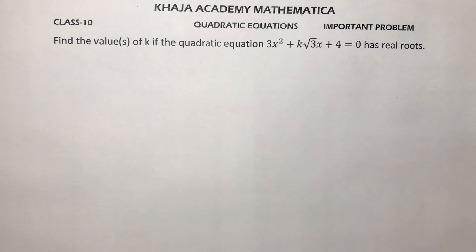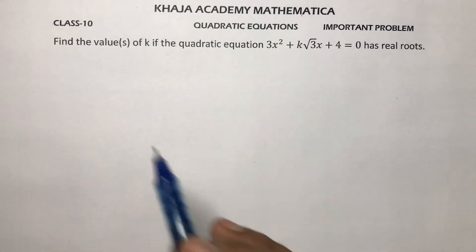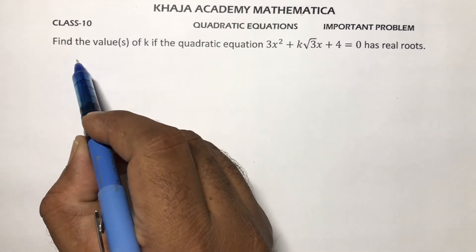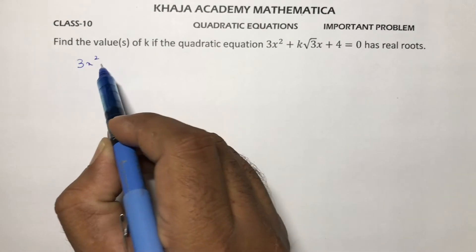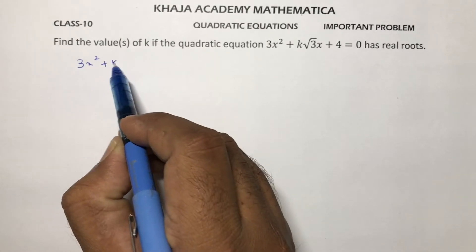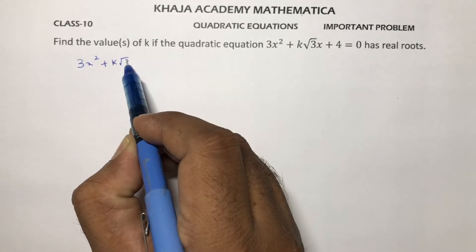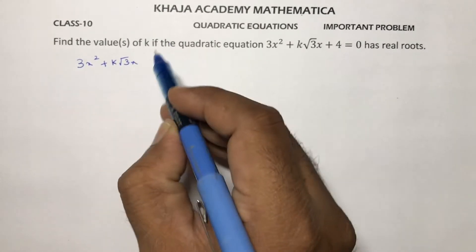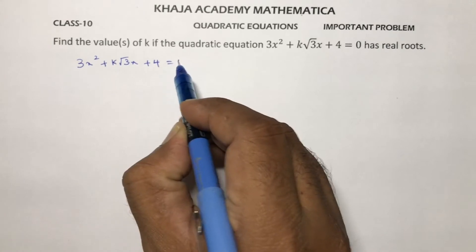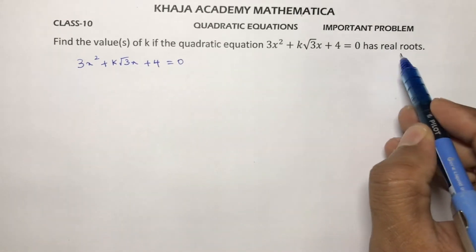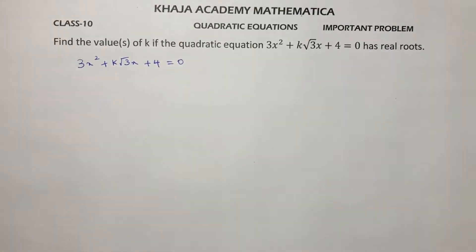Find the values of k if the quadratic equation 3x² + k√3·x + 4 = 0 has real roots.